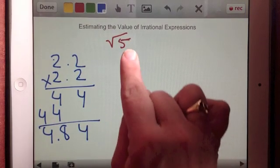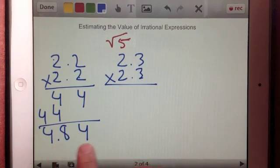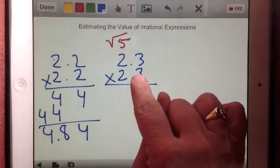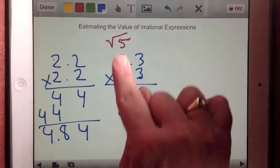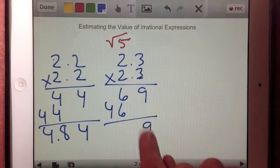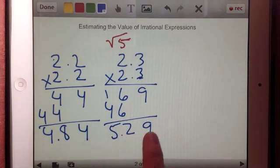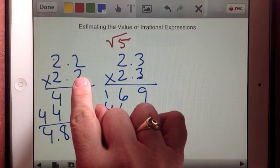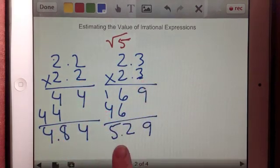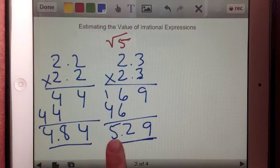so I wonder what would happen if I did 2.3 times 2.3. Would I get a decimal value closer to 5, or would it go past 5? And that's the question I'm looking at right now as I multiply this, so 3 times 3 is 9, 3 times 2 is 6, 2 times 3 is 6, 2 times 2 is 4, I add those up, 4, 5, put the decimal value right there, now I have 5.29, so all I did was just change the value from 2.2, I just upped it by 1 tenth, and now I have a number that's now surpassed square root of 5.